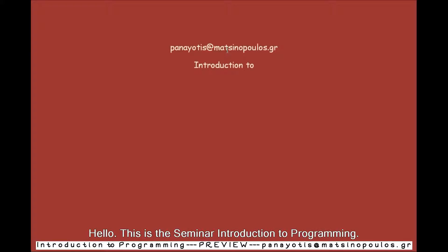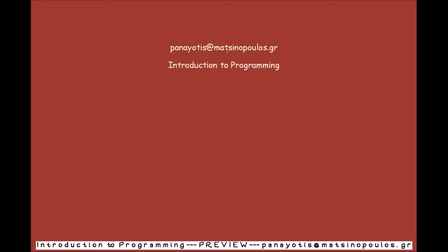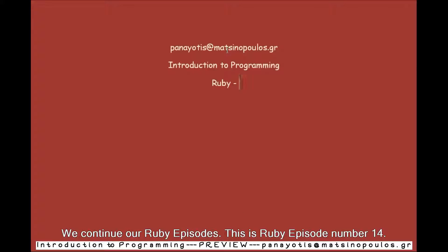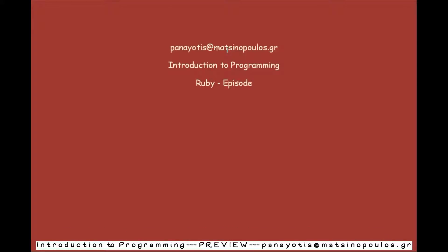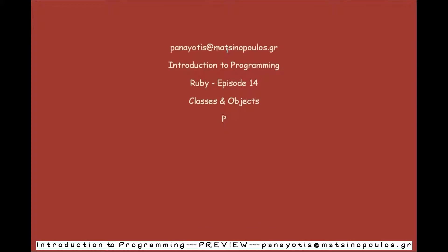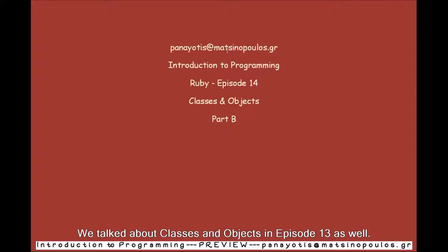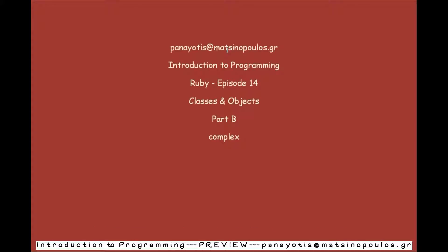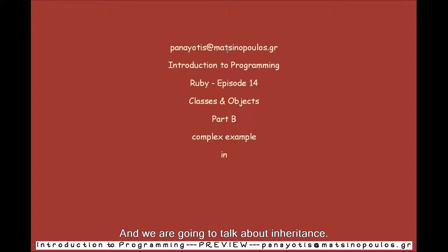Hello, this is the similar introduction to programming. We continue our Ruby episodes — this is Ruby episode number 14, Part P on classes and objects. We talked about classes and objects in episode 13 as well. In this episode we are going to have a more complex example on classes and objects, and we are going to talk about inheritance.